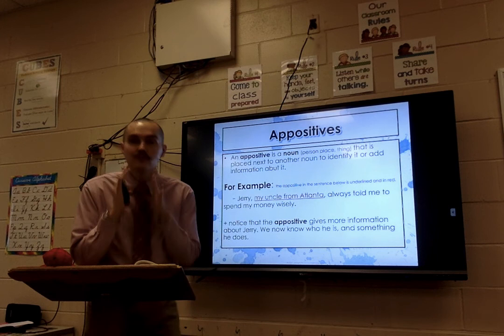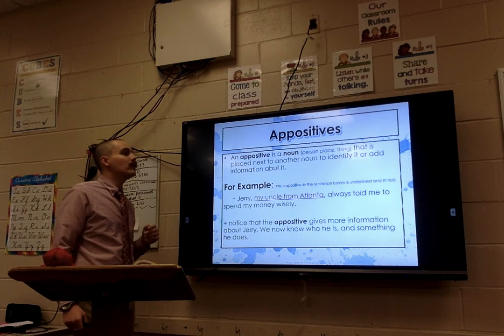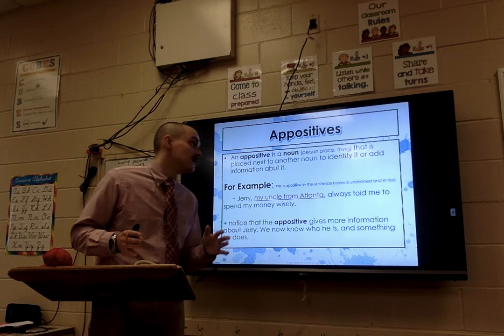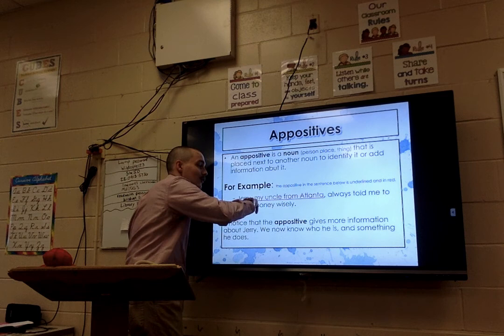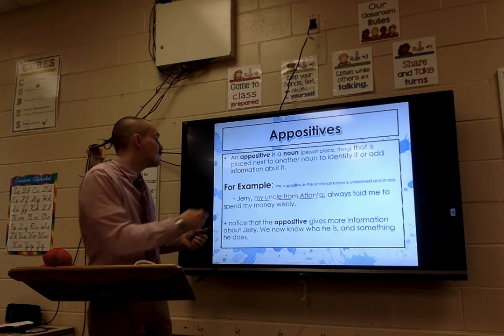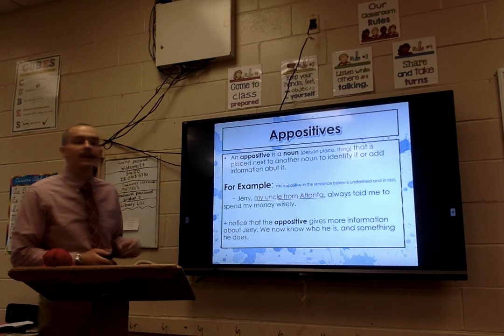So what is an appositive? An appositive is a noun — again, a person, place, or thing — that is placed next to another noun to identify it or add information about it. For example: 'Jerry, my uncle from Atlanta, always told me to spend my money wisely.' The phrase 'my uncle from Atlanta' is describing more about Jerry. If you just have 'Jerry always told me to spend my money wisely,' well, who is Jerry? We don't know. But this appositive tells you more about Jerry. It gives more information about a certain noun in a sentence.